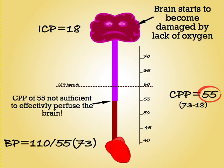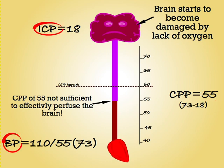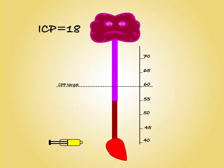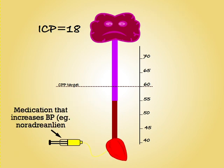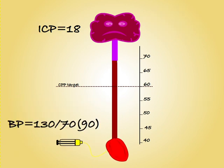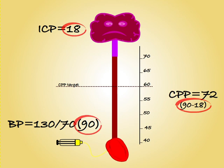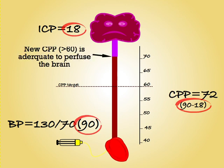We have two options: either reduce the ICP or increase the MAP. In this case, we opt to give medications to improve their blood pressure. Their new MAP of 90 is now adequate to overcome the increased ICP and push the CPP above 60 again.